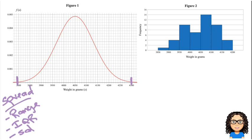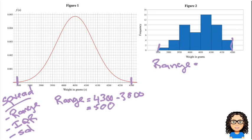If I look at the range in figure two, it goes from approximately 3,850 up to 4,200. So let's actually calculate that. So that would give me a range for the theory of 4,300 minus 3,800, which is 500 grams. Or the range for the sample, 4,200 minus 3,850 is 350 grams. So there's one way we can do it.